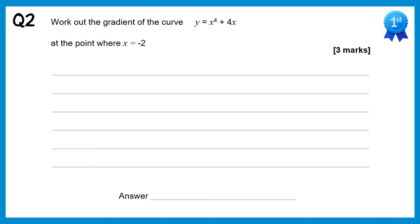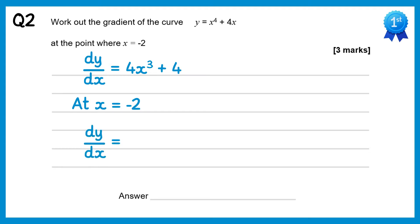For this question, same approach, so we'll do dy/dx. Differentiate x to the 4 gives you 4x to the 3, differentiate 4x is just plus 4, and then we'll substitute in x equals negative 2. So at this point dy/dx equals 4 lots of negative 2 cubed plus 4. Negative 2 cubed is negative 8, times that by 4 is negative 32, and negative 32 add 4 gives you negative 28.